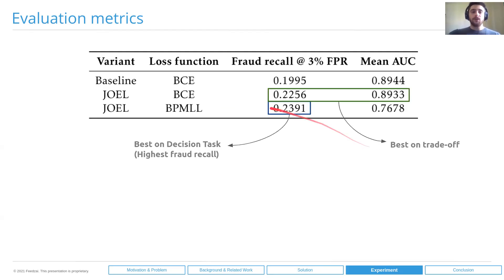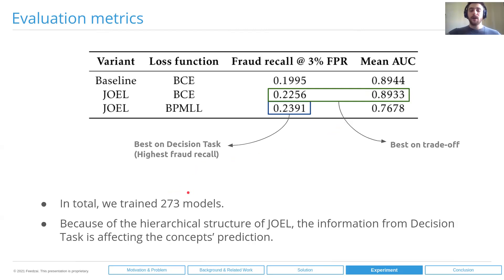Regarding the results: here we have the baseline and JOEL with two different loss functions. As we can see, the JOEL architecture is better on the decision task — fraud recall — and also on the explainability task measured by mean AUC. We can also see that JOEL with standard binary cross-entropy loss function offers a good trade-off between the two. Because of the hierarchical structure of JOEL, information from the decision task affects both the decision and explainability tasks. We are jointly learning all of this, and this is why the explainability of the model also improves when using information flowing from the decision task.